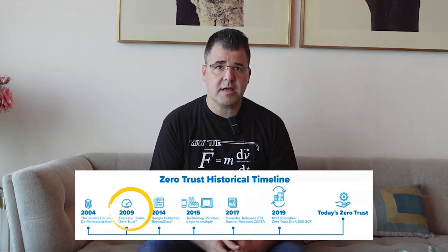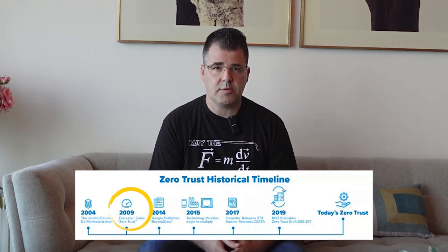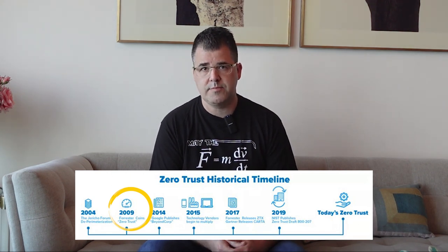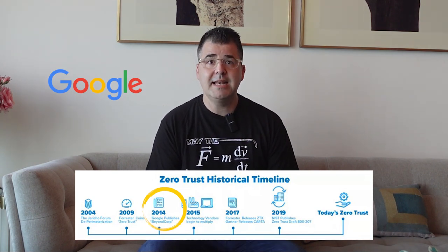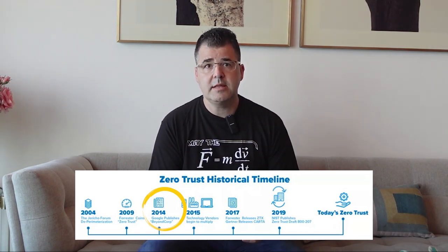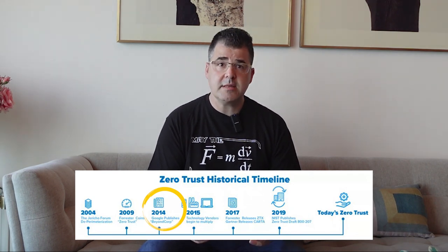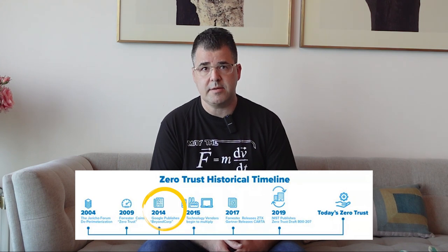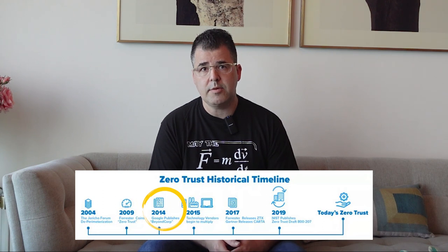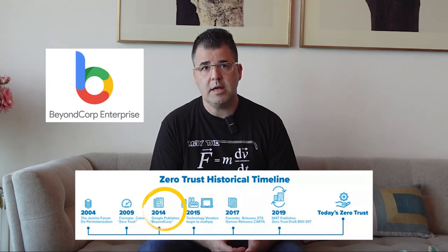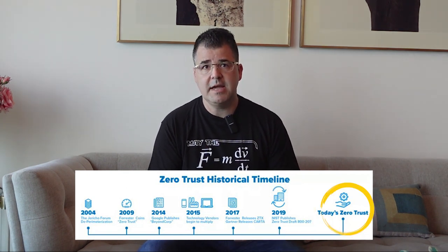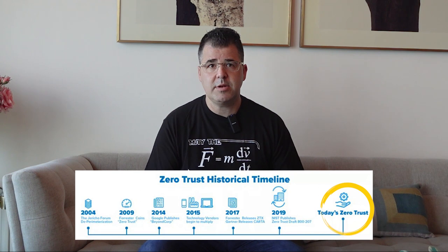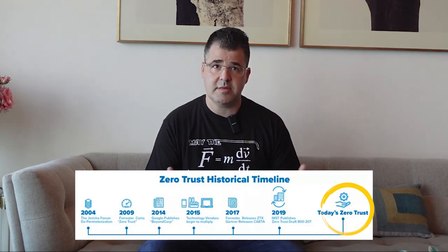He started to discuss how organizations might implement the Zero Trust model to enhance their security posture. Five years later, Google started to work on Zero Trust architecture and implemented the model in their enterprise to improve cybersecurity inside and outside of its corporate perimeter. After implementing it, Google issued a white paper and termed their model BeyondCorp. In 2019, NIST published a Zero Trust draft, and here we are today with the established concept and architecture called Zero Trust.